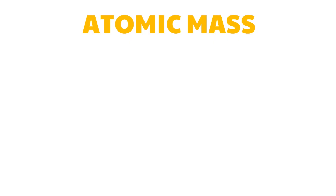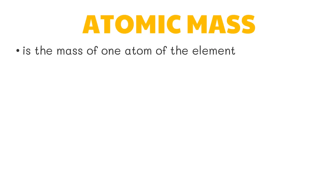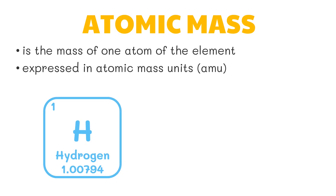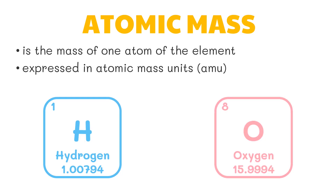The atomic mass of an element is the mass of one atom of the element. It is expressed in atomic mass units. For example, the atomic mass of hydrogen is 1.00794 atomic mass units, and that of oxygen is 15.9994 atomic mass units.